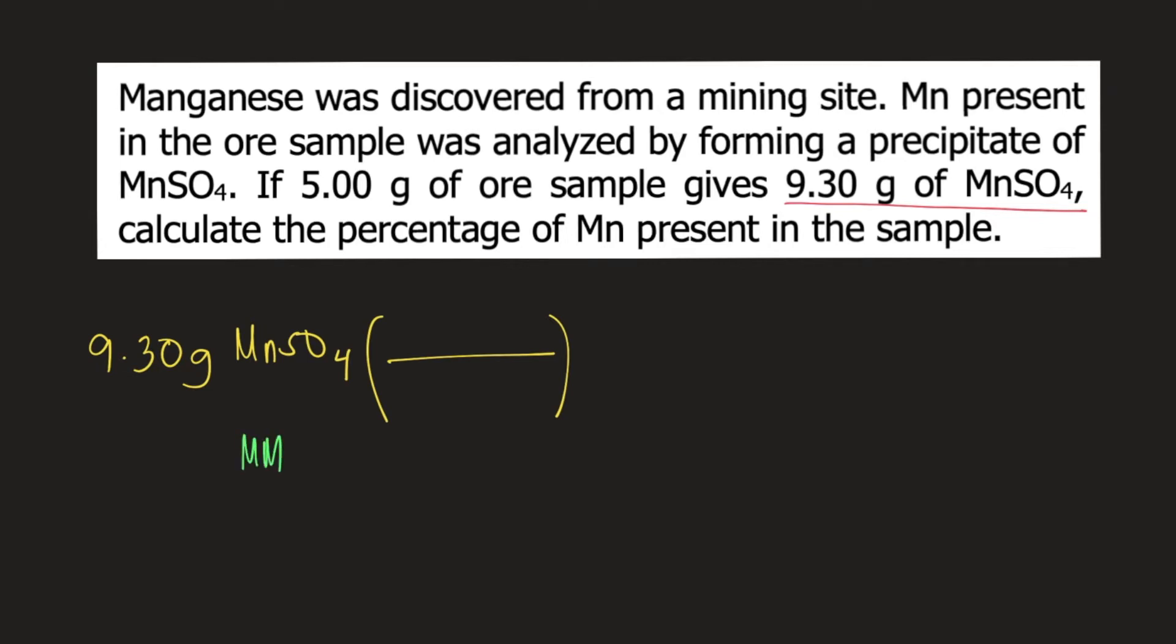And the molar mass of MnSO4 is 151.01 grams per mole. So we plug that into our equation, 151.01 grams of MnSO4 is 1 mole of MnSO4. So grams of MnSO4 would cancel. Now we have moles of MnSO4.